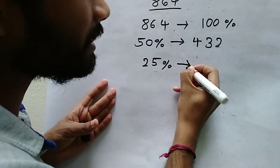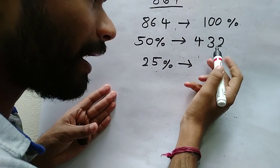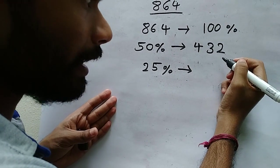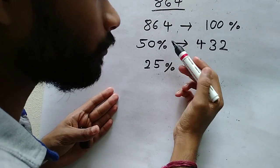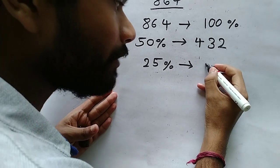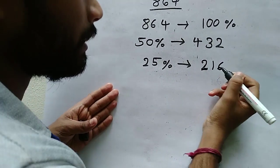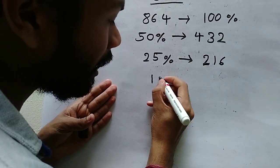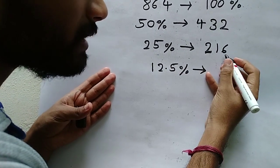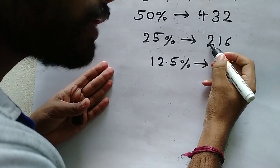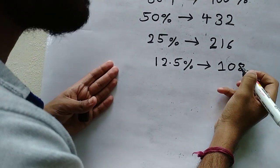Then what about 25 percentage? 25 percentage will be half of 50 percentage. So you need to find half of 432. Therefore, 25 percentage of 864 will be half of 432, that is 216. Similarly, you can find 12.5 percentage by making half of the 25 percentage: 216 divided by 2, which gives 108.